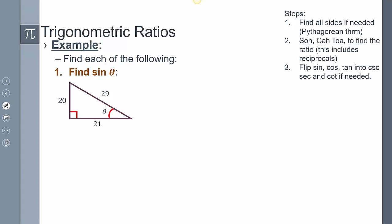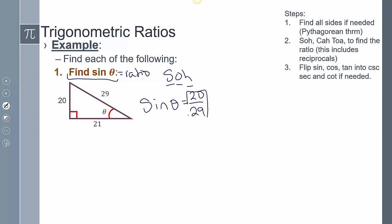Let's practice finding some ratios. To find sine of theta, first make sure all the sides are present. Then, using SOHCAHTOA, sine is opposite over hypotenuse. That ratio is going to be my answer. The first step is confirming all sides are labeled; the second is applying SOHCAHTOA to find the ratio.